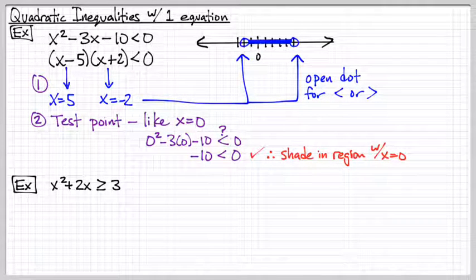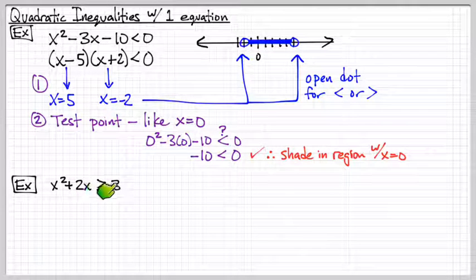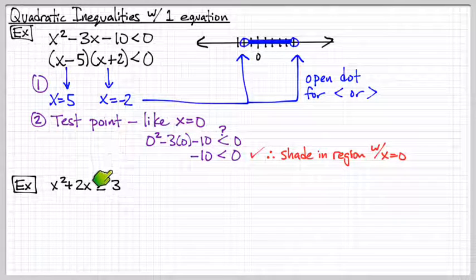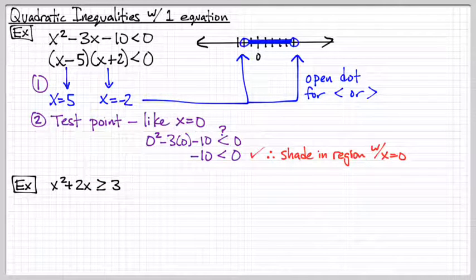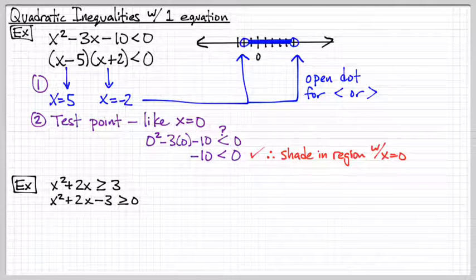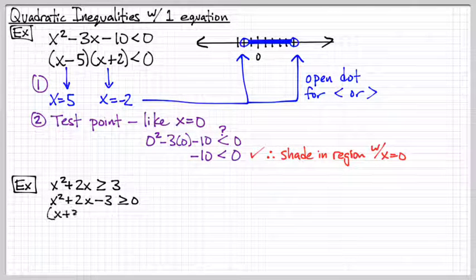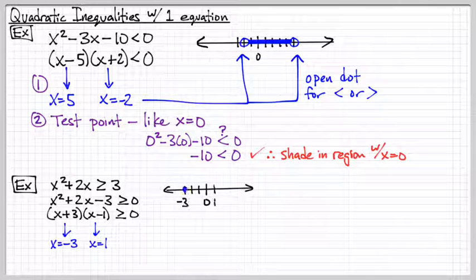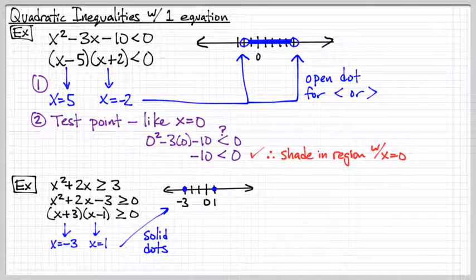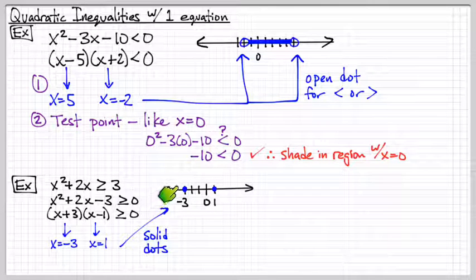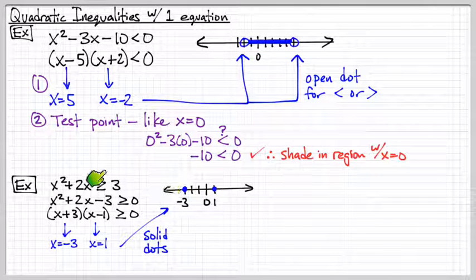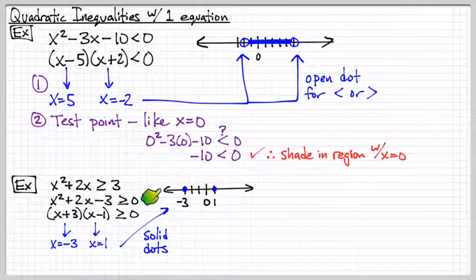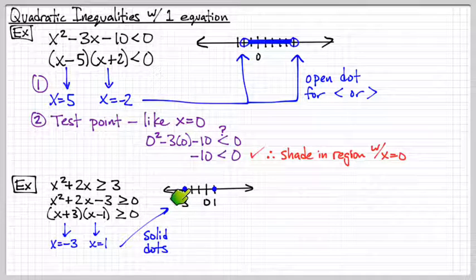Let's do one more. Now in this case, we need to do a bit of work before we do any factoring or we try to solve it. We want to bring the three to the other side. And now we can go ahead and attempt to factor it. In this case, it is quite factorable. And we have two solutions. We have a solution at one and negative three. And in this case, we're going to be using solid dots because we have a greater than or equal. Because of the equal sign here, we can actually use the solid dots.